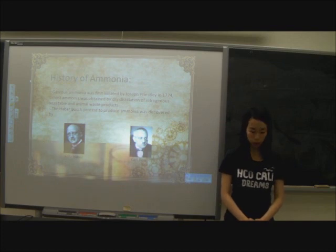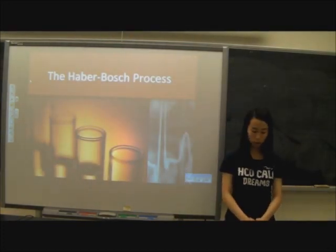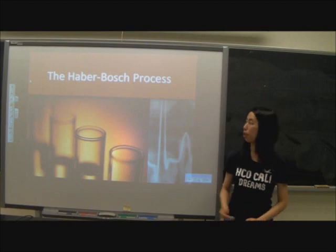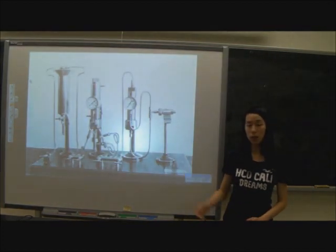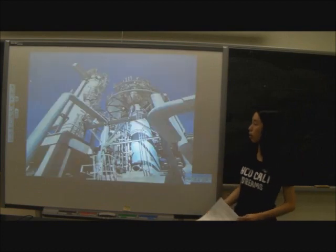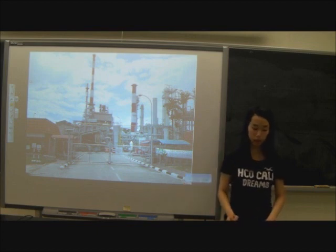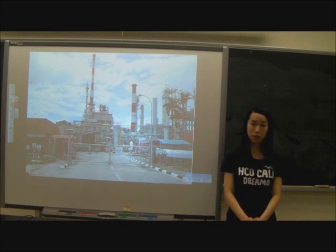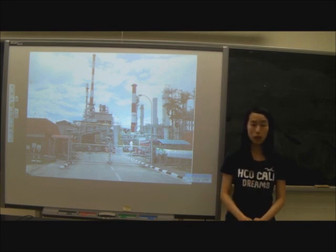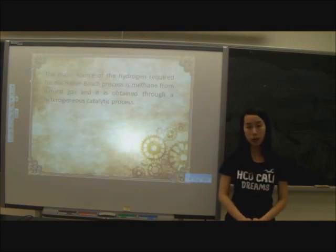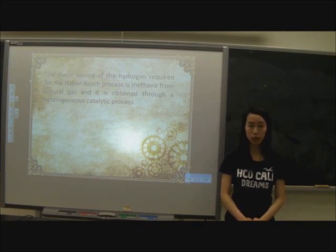Now we'll get into the more technical side of this process. Because ammonia is widely needed, it is one of the most frequently produced inorganic chemicals. Here you can see an ammonia plant from the old days compared to what we have right now, and here is an ammonia plant located in Malaysia. It's estimated that half of the protein within us is made of nitrogen that was once fixed by this process. By far, the major source of hydrogen needed for this process is obtained through methane from natural gas.